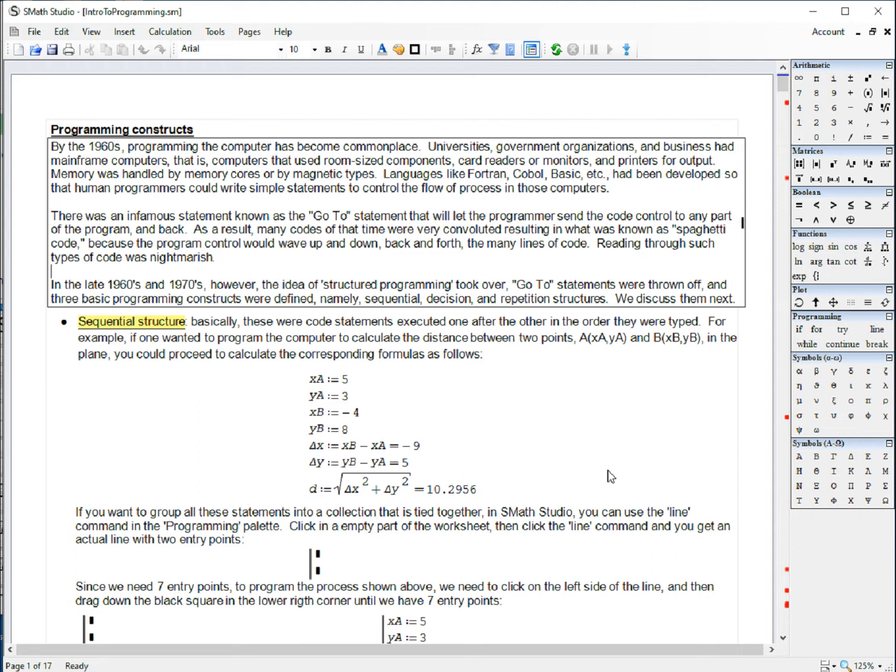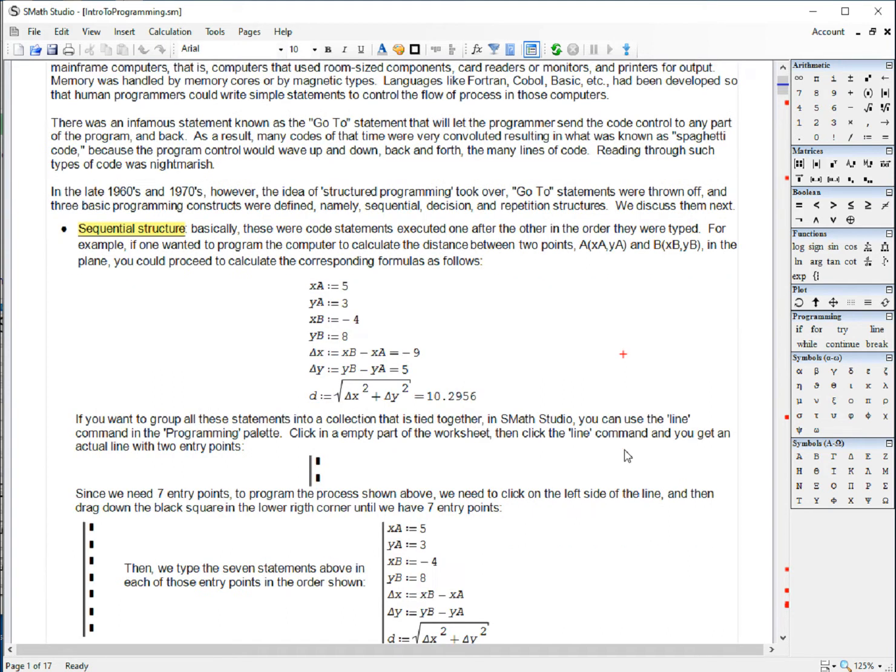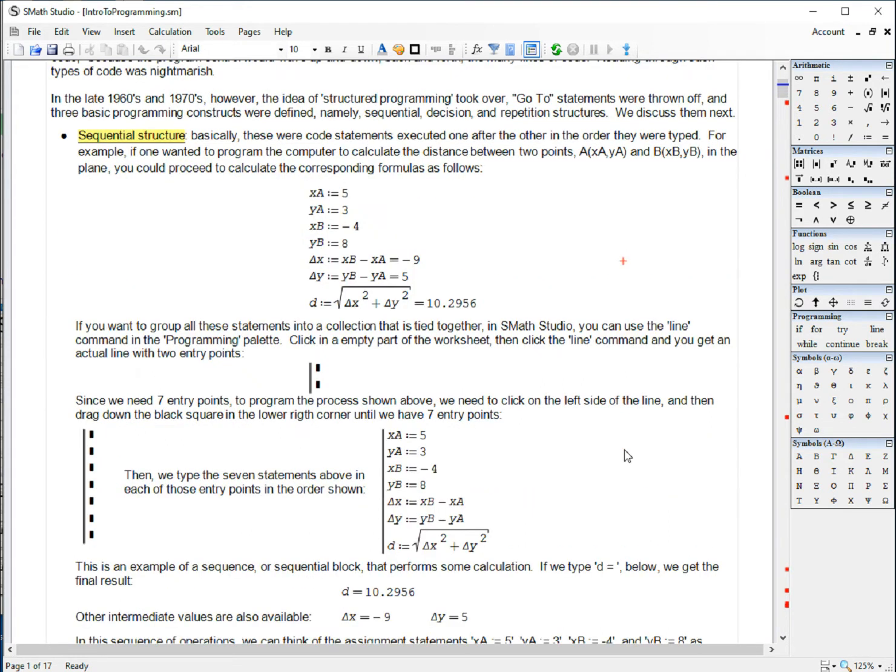So towards the beginning of the 1970s, computer scientists produced what is called structured programming. And they determined that there's three basic constructs: sequences or sequential structures, decision structures, and repetition structures. And with those, you could write almost any program without having to produce that spaghetti code. So today we're going to talk about sequential structures.